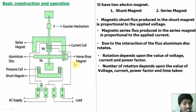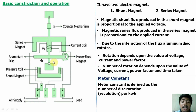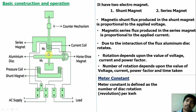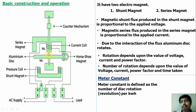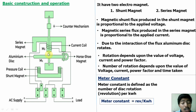When the meter consumes energy, the disc will rotate. Based on the number of rotations, we can calculate the energy value. Next, we will discuss the meter constant. Meter constant is defined as the number of revolutions per kilowatt hour. For example, if a meter takes 50 revolutions for one kilowatt hour, the meter constant is 50. Another meter may take 100 revolutions per kilowatt hour — that meter constant is 100. A meter constant is fixed for a particular meter but varies from meter to meter.